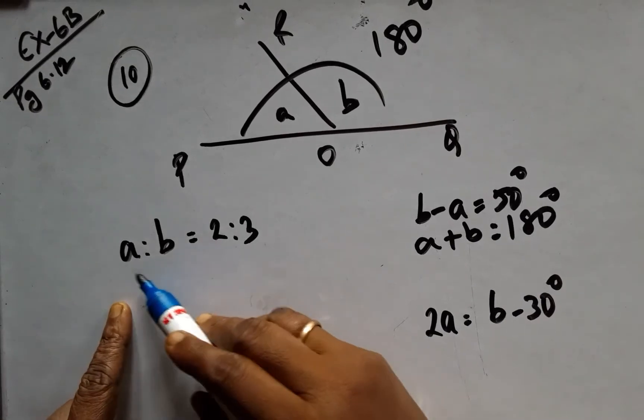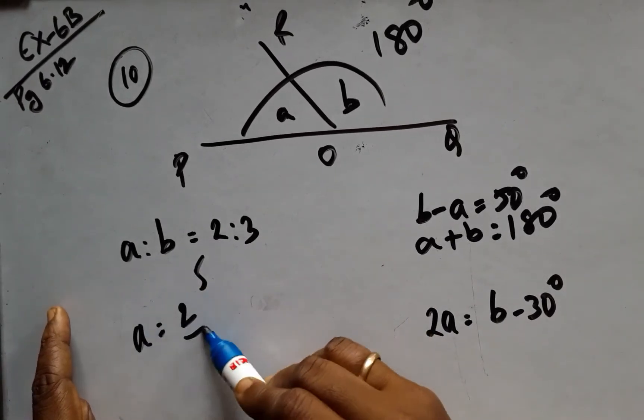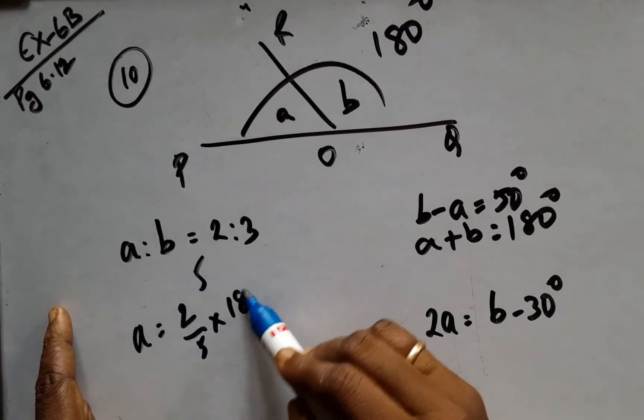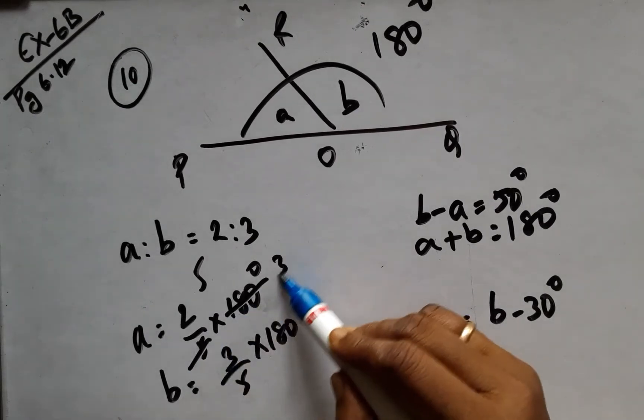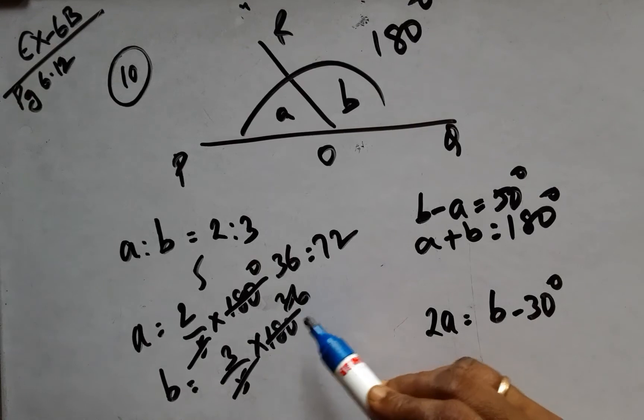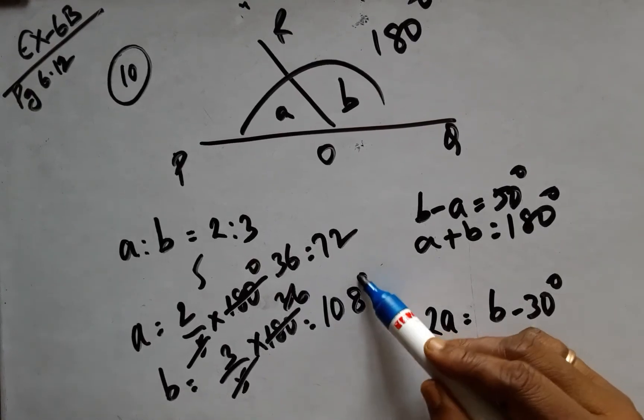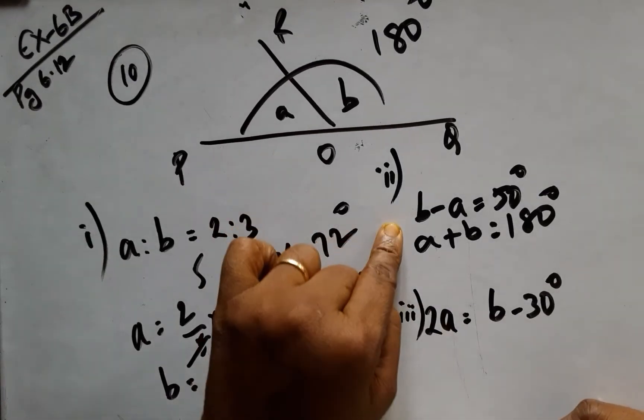And see here, the sum of ratio will be 5, and the part of A will be 2/5 of 180, and part of B will be 3/5. And always remember, 5 × 36 = 180, therefore A will be 72 and B will be 108 degrees. The sum would be 180, as it should be.